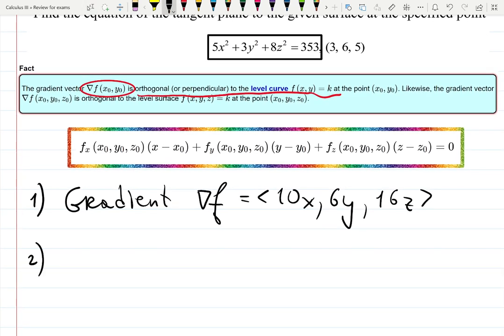Now step 2, let's plug the point. That will give us slope. We used to have one derivative with one slope; now it's three different derivatives, but we're plugging the point. Gradient at the given point (3, 6, 5).